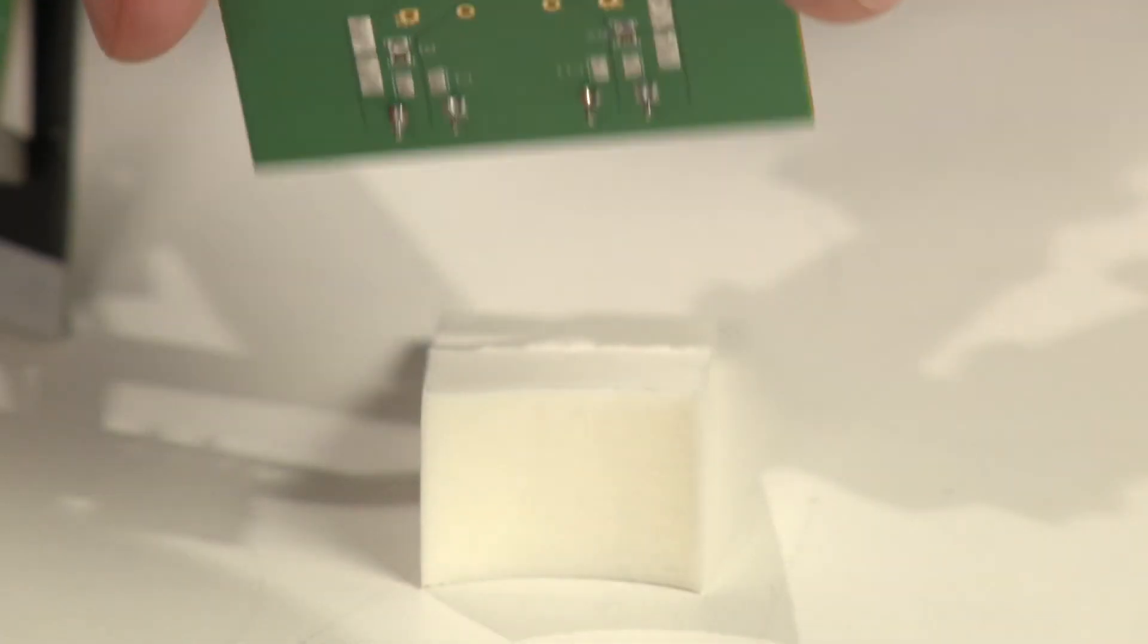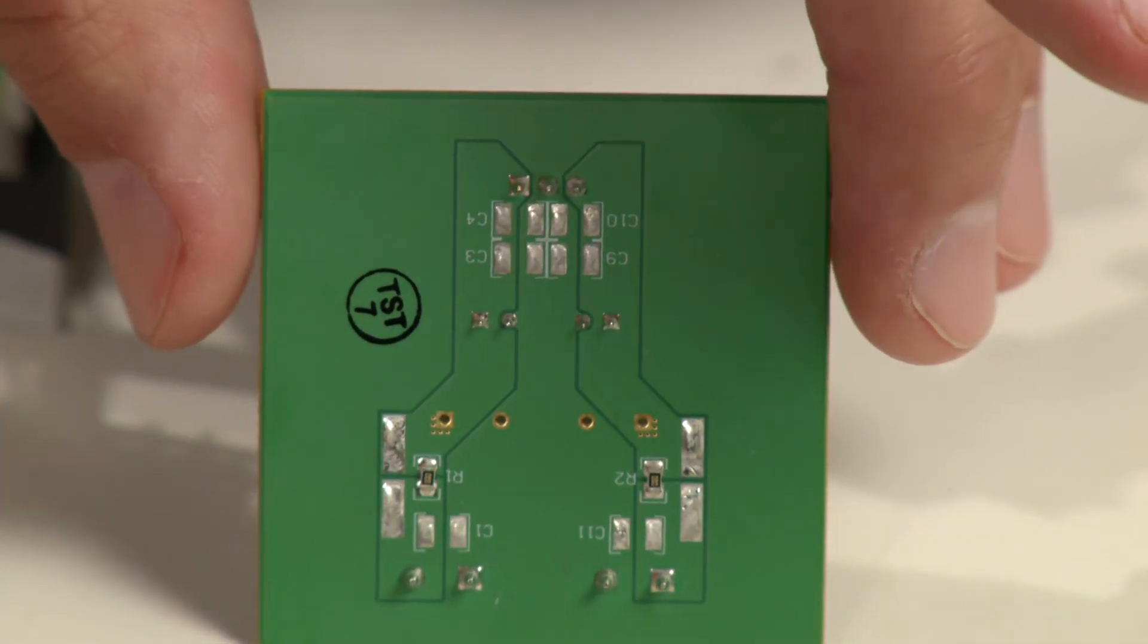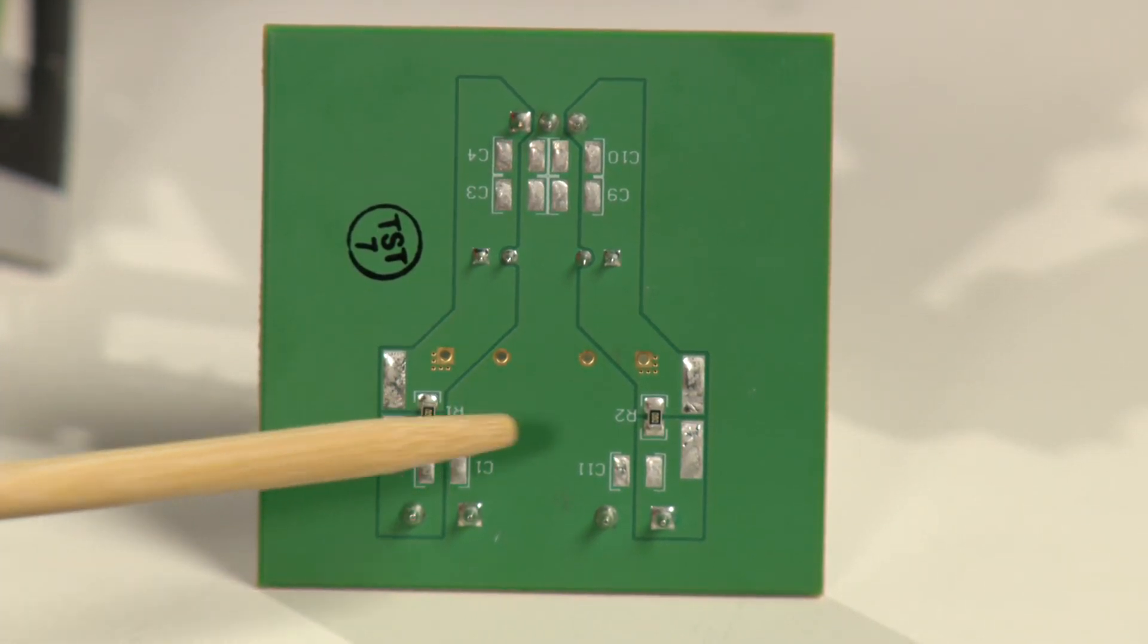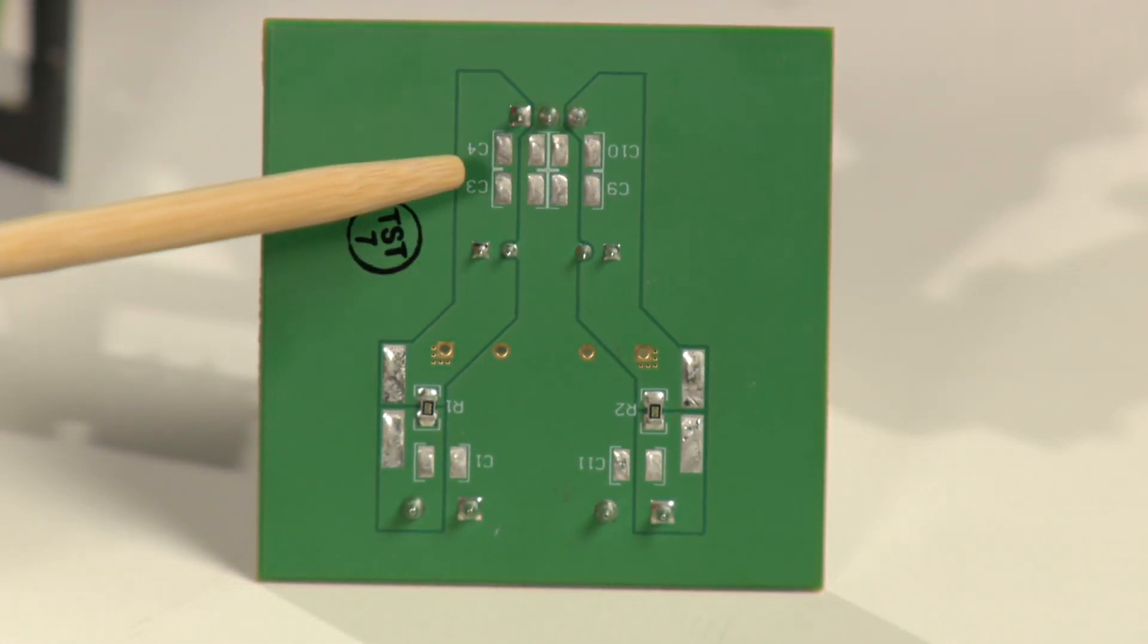Additionally on the bottom of the board are more footprints for components for both input capacitors and output capacitors as well as input and output filter components.